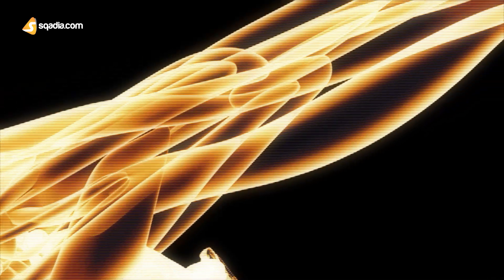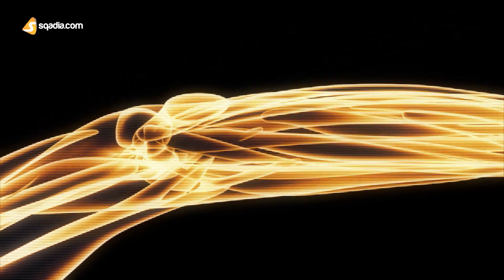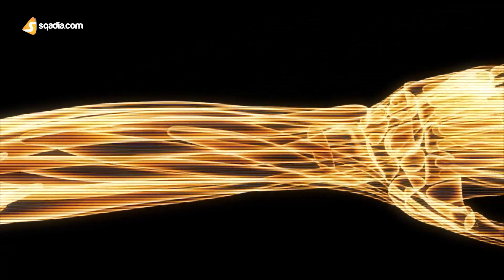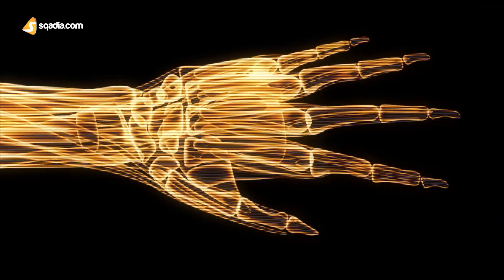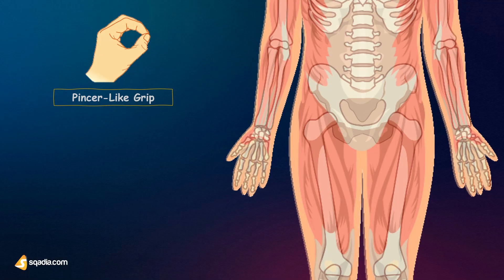The hand, positioned at the end of the upper limb, is a combination of complex joints whose function is to manipulate, grip, and grasp, all made possible by the opposing movement of the thumb. The pincer-like movement of the thumb, which enables us to grab objects between the tips of the thumb and index finger, accounts for much of the significance of the hand.